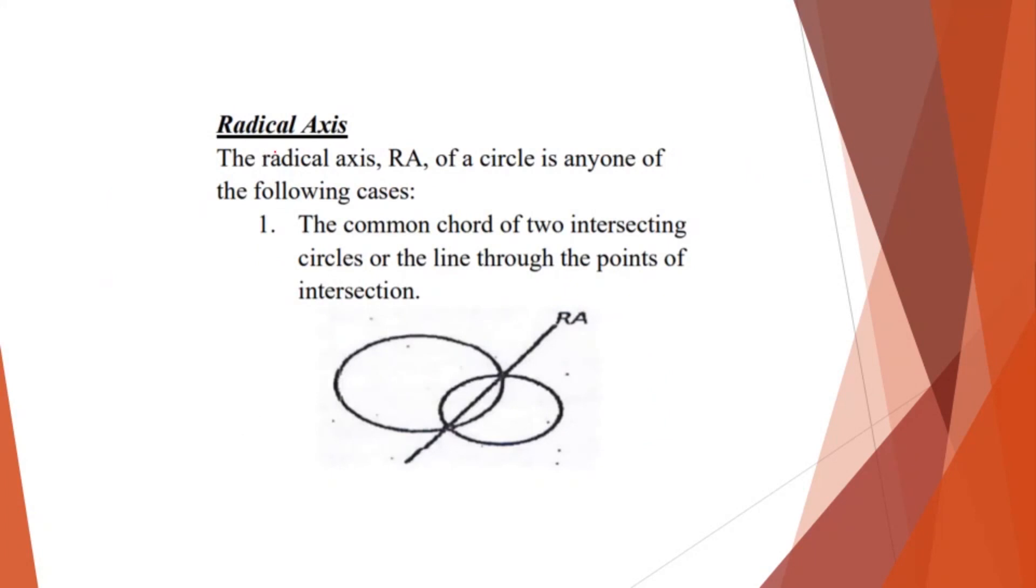So also we have this radical axis here. So the radical axis RA of a circle is any one of the following cases. So first one is the common chord of two intersecting circles or the line through the points of intersection. So this line here. So this is your radical axis. So this is their common chord, the common chord of the two circles.